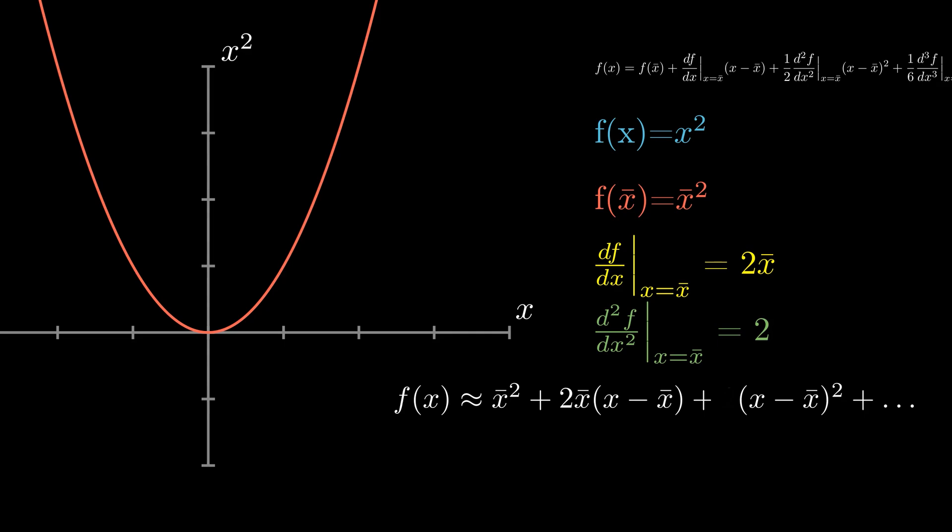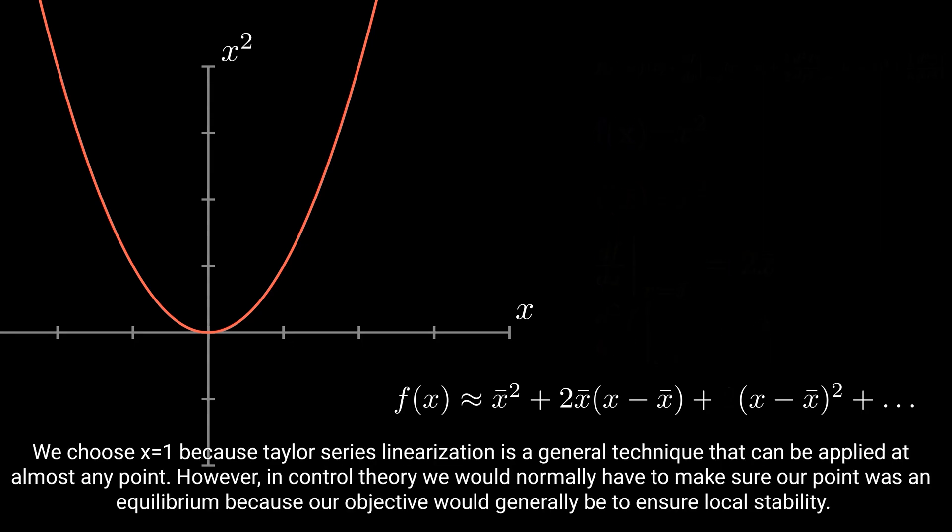So with the start of our Taylor series expansion filled in, we now need to pick what would be an equilibrium point. Now for the sake of illustration, rather than picking an equilibrium, let's just pick an arbitrary point and say x̄ equals 1.